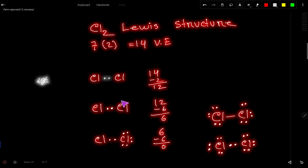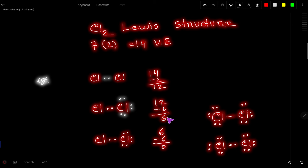This first chlorine atom already has two electrons from the bond, so it can take a maximum of six more. We place six electrons around it, giving it two, four, six, eight valence electrons total. Out of 12, we have used six, so six remain.